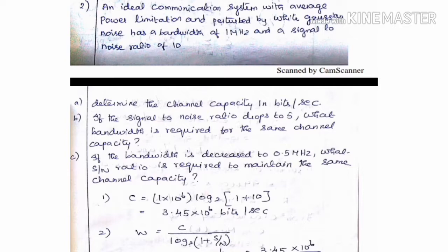C is equal to W log to the base 2 of 1 plus S by N. W is 10 to the power 6 (1 MHz), log to the base 2 of 1 plus S by N ratio of 10. Putting in the values, the channel capacity value is 3.45 into 10 to the power 6 bits per second.